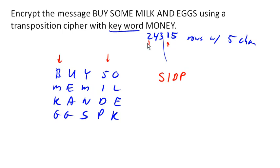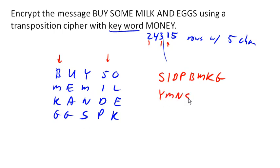Next I'm going to write down B, M, K, G. Then I'm going to write down the middle column: Y, M, N, S. Next I'm going to write down U, E, A, G. And then last, I'm going to write down the last column: O, L, E, K.